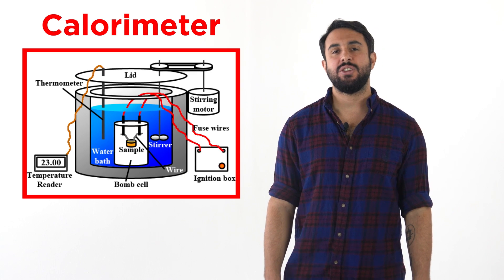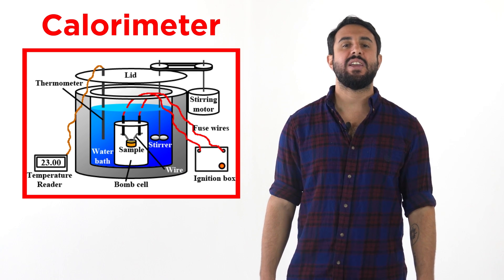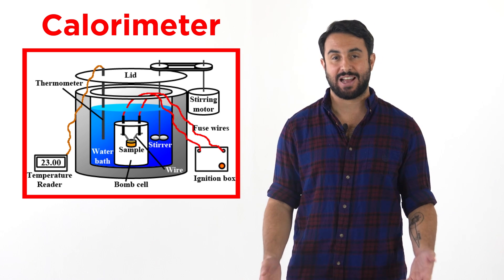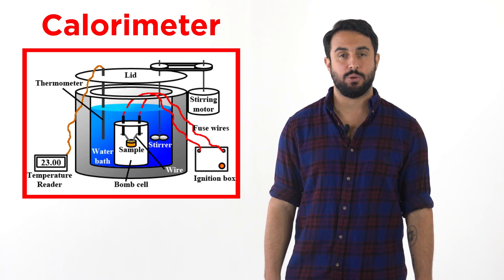Professor Dave and Chegg here. If we want to know how much heat is absorbed or released in a chemical reaction, we can physically do the reaction in a calorimeter, or there are ways that we can calculate this mathematically without having to do the reaction.